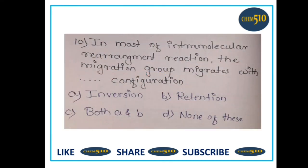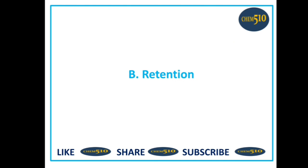Question ten: in most intramolecular rearrangement reactions, the migrating group migrates with which configuration? a) inversion, b) retention, c) both A and B, or d) none of these. In most intramolecular rearrangement reactions, the migrating group migrates with retention of configuration, so option B is correct, which is retention.